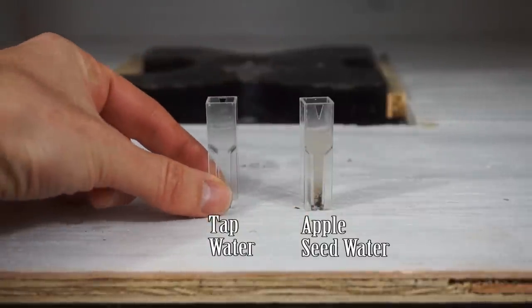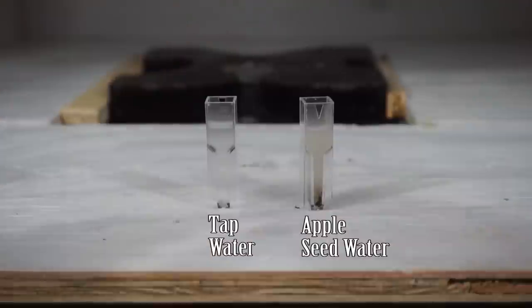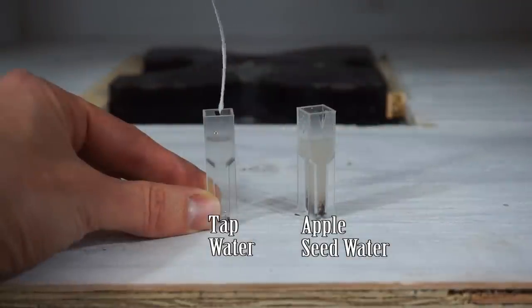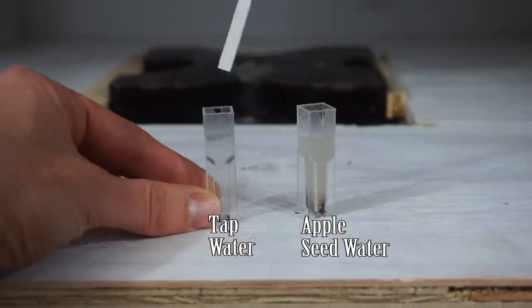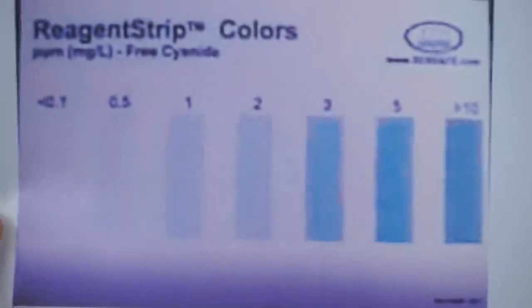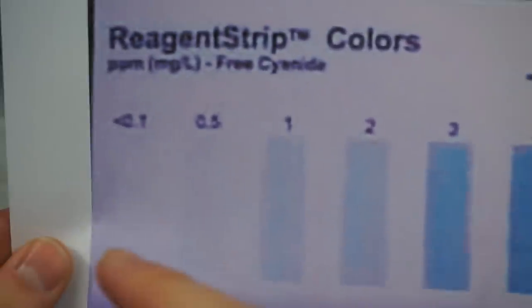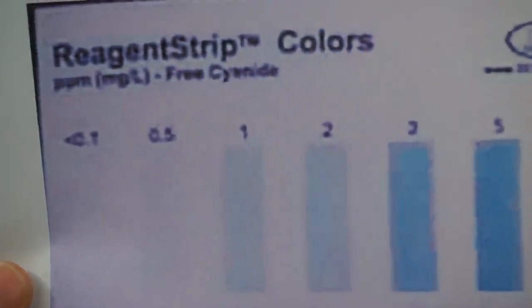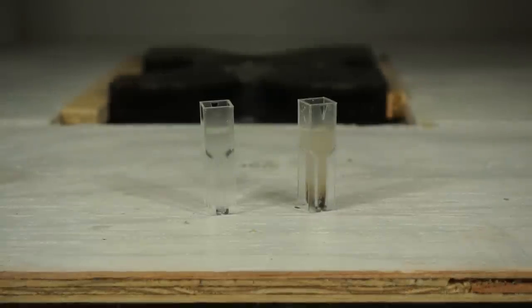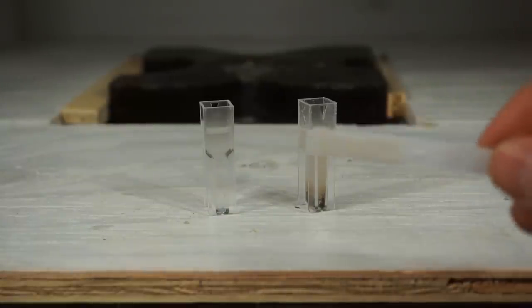So this is my control here. We know that this one shouldn't have cyanide in it. So it should be white according to this chart here. This is the strip colors. So this is greater than 10 parts per million. White down here is less than 0.1 parts per million. The highest amount that you should have in your water is 0.2 parts per million.